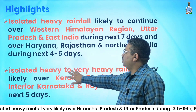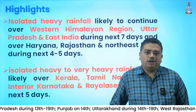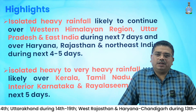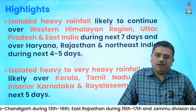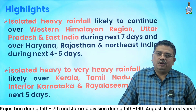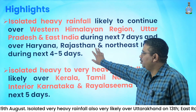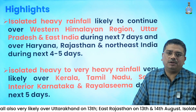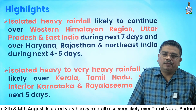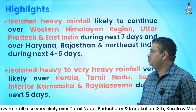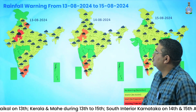Now the two highlights for today: first, isolated heavy rainfall is very likely to continue over the western Himalayan region, Uttar Pradesh, and eastern parts of the country during the next seven days, and isolated heavy rainfall is also likely to continue over parts of northeast India, Rajasthan, and Haryana during the next four to five days. Second, isolated heavy to very heavy rainfall is also likely over Tamil Nadu, Kerala, south interior Karnataka, and adjoining regions during the next four to five days.